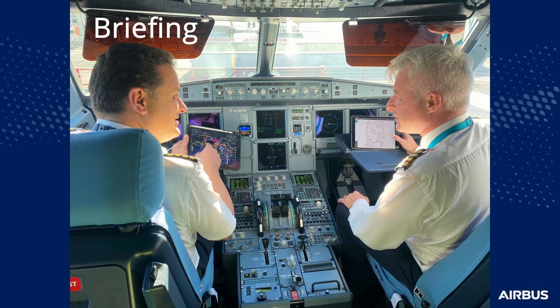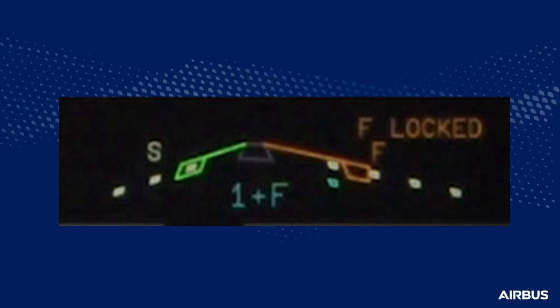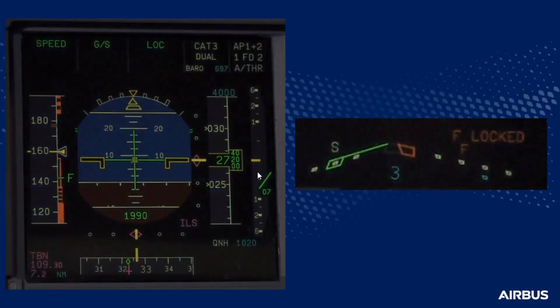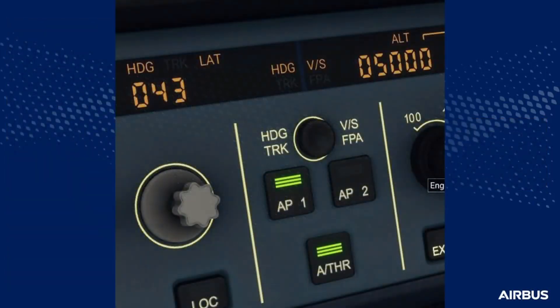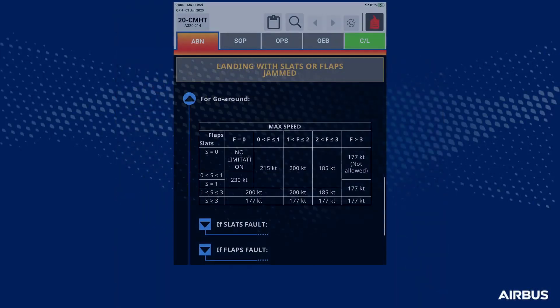In the threat and error management part of the approach briefing, the following essential points should be considered: the energy management during the approach because the aircraft will have less drag than normal; the pitch during the approach requires increased tail strike awareness for certain slat-flap configurations; the use of the autopilot is restricted to 500 feet because it is not tuned for abnormal configurations. Another essential point is the configuration for go-around and the maximum speed the aircraft can fly after the acceleration segment.